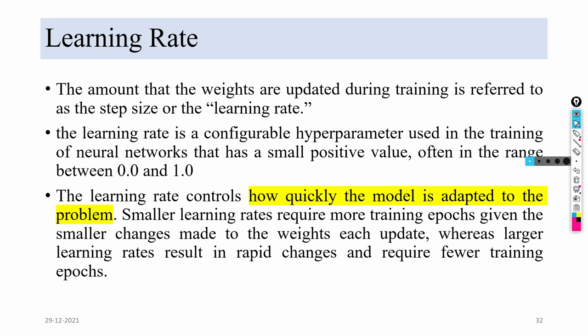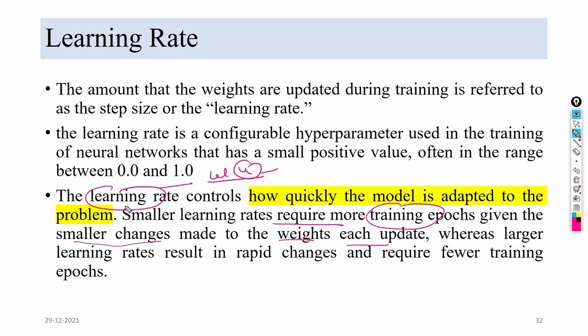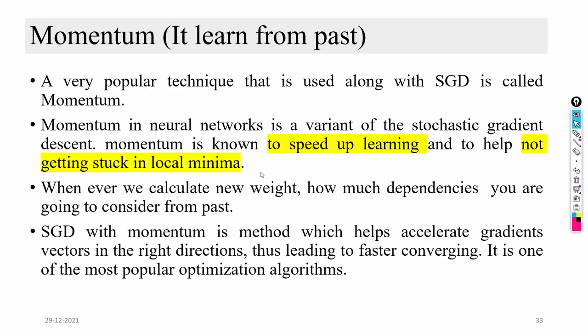Learning rate is a hyperparameter that defines the amount by which weights are updated during training. It is a configurable parameter with values between 0 and 1. When the learning rate is high, it quickly changes the weights but cannot reach the global minimum. When the learning rate is very small, it requires more training time and more epochs with smaller changes to weights at each step. A dedicated video (lecture 4) explains learning rate in more detail.